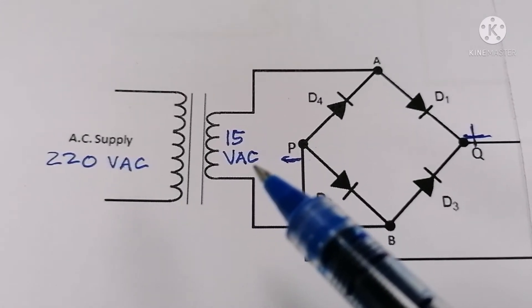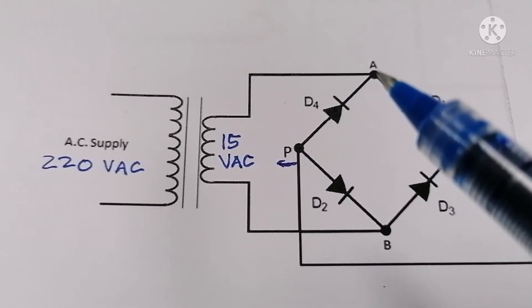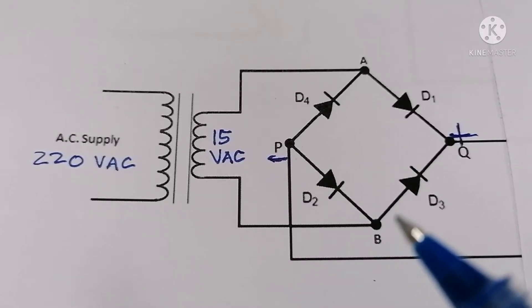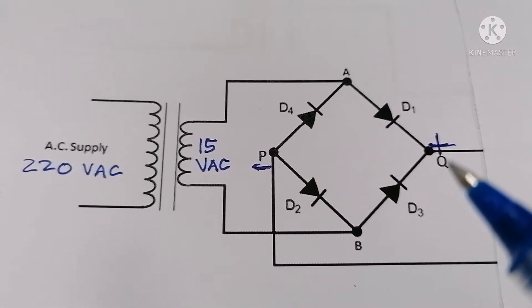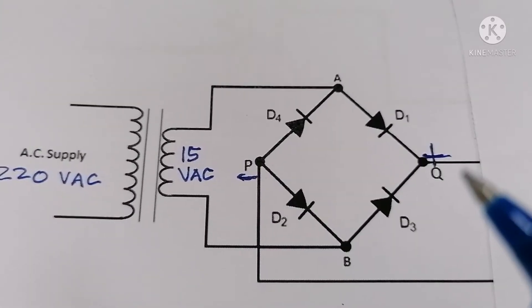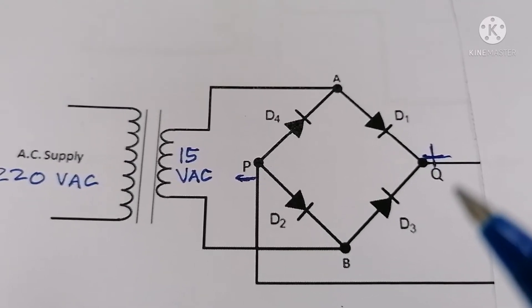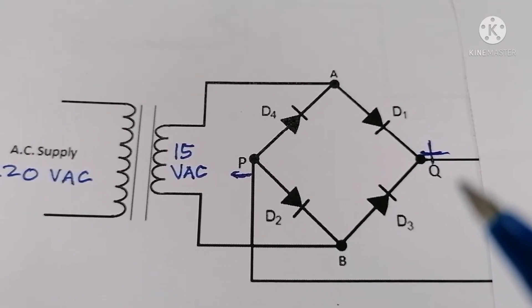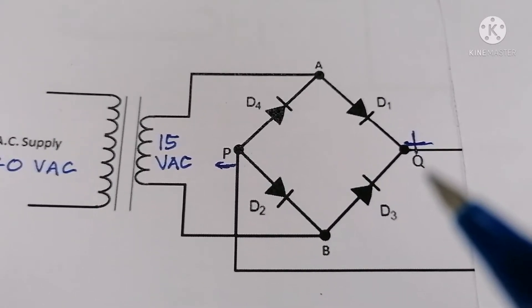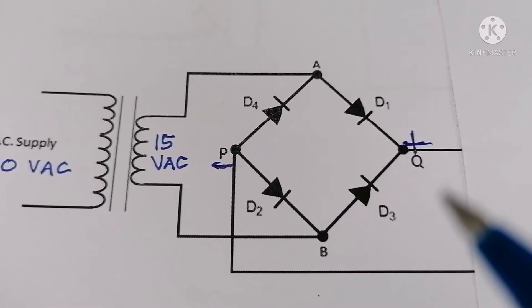15 volts AC is fed to the bridge rectifier point A and point B and I will show you the waveforms. Please take note that the bridge rectifier is a device that converts the AC voltage into DC voltage.